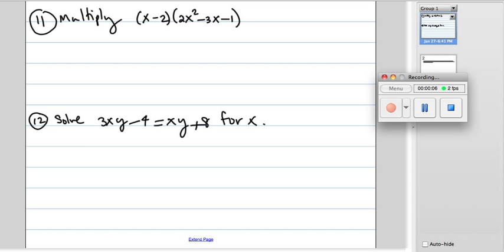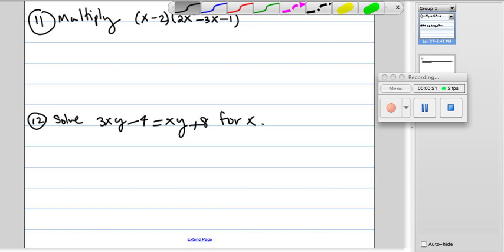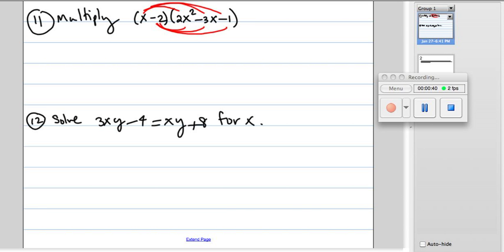Here it says multiply, so we have to distribute both the x to the second parentheses and the negative 2 to the second set of parentheses. We're going to multiply x by every one of these, then multiply negative 2 by every one of these. So x times 2x squared is 2x to the third, x times negative 3x is negative 3x squared, and x times negative 1 is negative x.